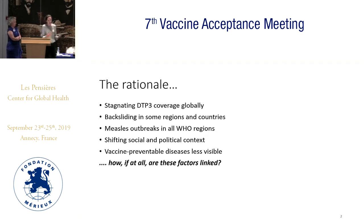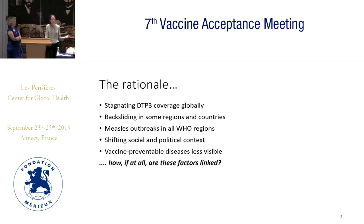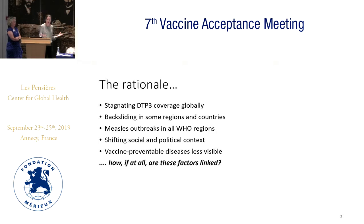Of course that reflects some country differences, and we also have many measles outbreaks in all regions of the world for many different reasons. At the same time there are different factors being used to explain these changes and trends in global immunization uptake. We know that vaccine-preventable diseases are less visible, and the information environment and misinformation are potentially shaping attitudes and behaviors.